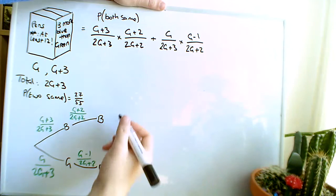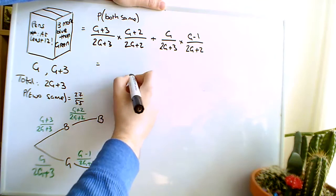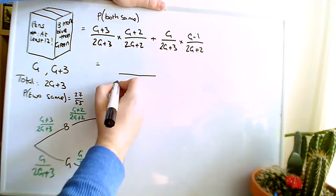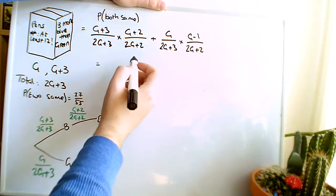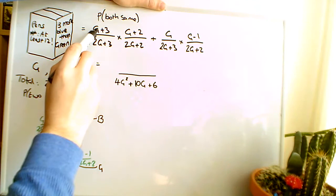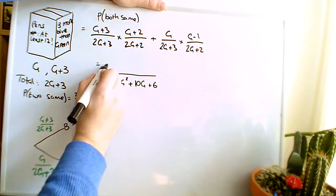Now notice that the denominators are the same in both of these terms, so I'm going to rewrite that with 2G as a denominator. I'm going to expand, so we're going to get 4G squared, 2G times 2 is 4G, and 6G, so that's going to be 10G, and 3 times 2 is 6.